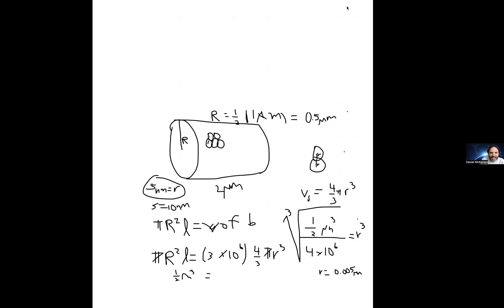So the spacing between each of these little proteins within this bacterium is about 10 nanometers. That's how to solve this kind of problem.